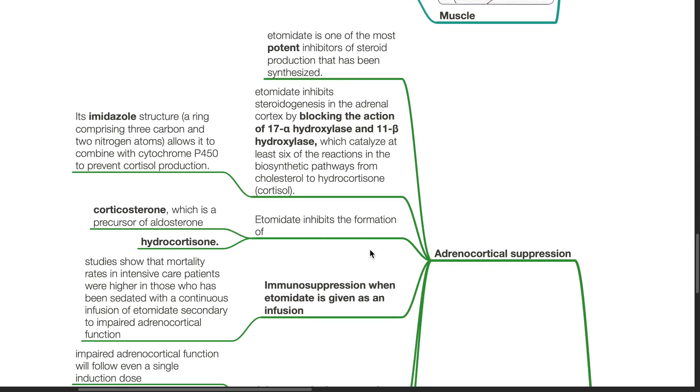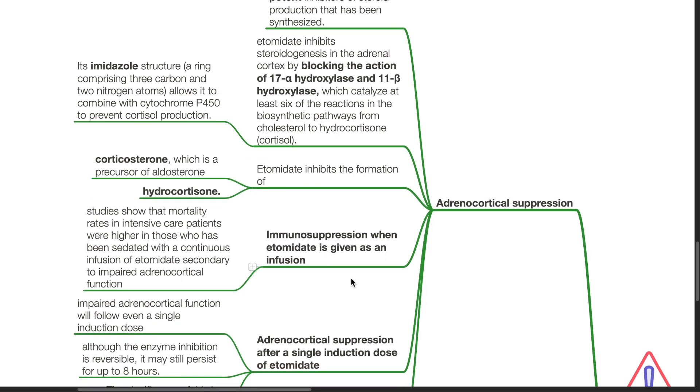Etomidate thus inhibits the production of corticosterone, which is a precursor to aldosterone, and hydrocortisone. Immunosuppression when etomidate is given as an infusion: Studies show that mortality rates in intensive care patients were higher in those who had been sedated with a continuous infusion of etomidate due to impaired adrenocortical function.